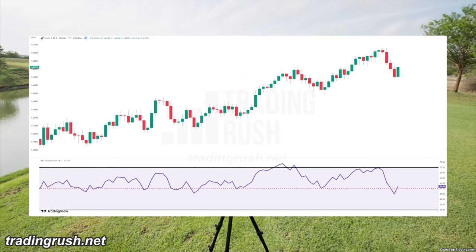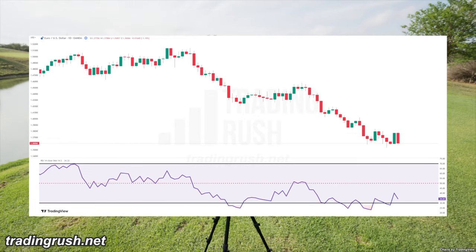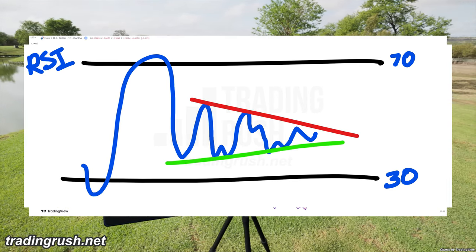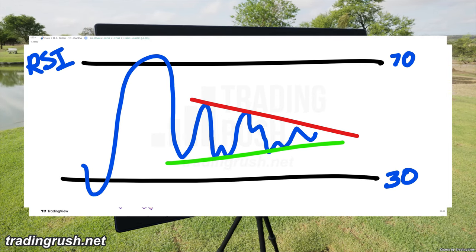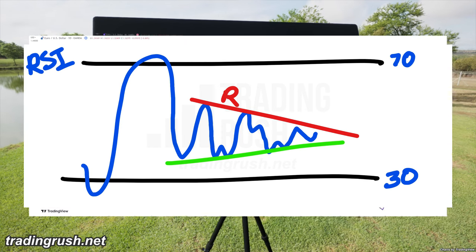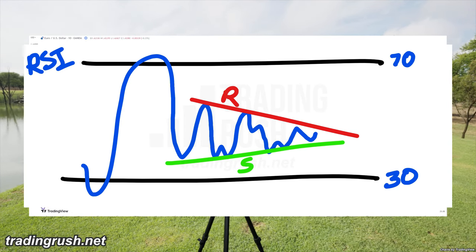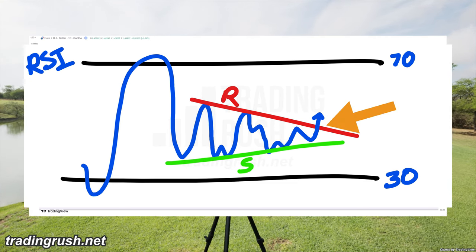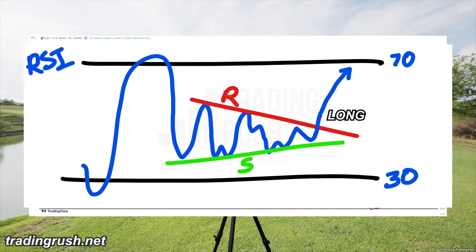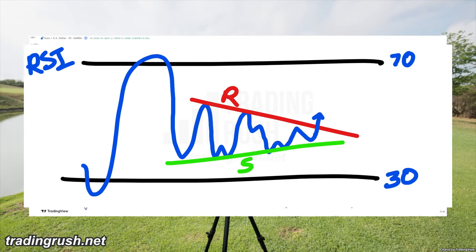Strategy number three. RSI's creator didn't just talk about trend lines — he also said you could draw other shapes on the RSI chart that you might not see just by looking at the price. For instance, connecting swing highs and swing lows on the RSI can produce shapes like a flag or triangle. The upper side of the triangle acts as resistance while the lower side acts as support. The RSI creator suggested that if the RSI line breaks through the triangle's support or resistance, we could see a significant price movement in that direction.